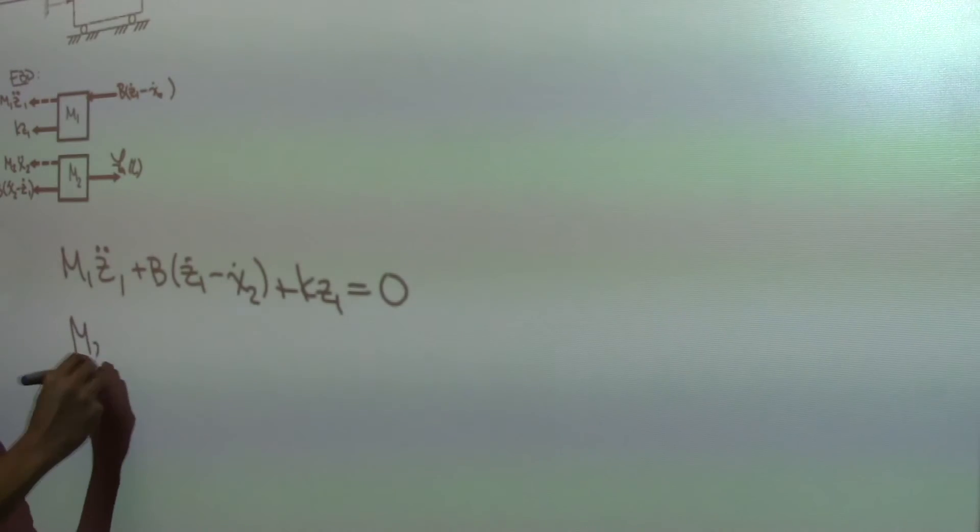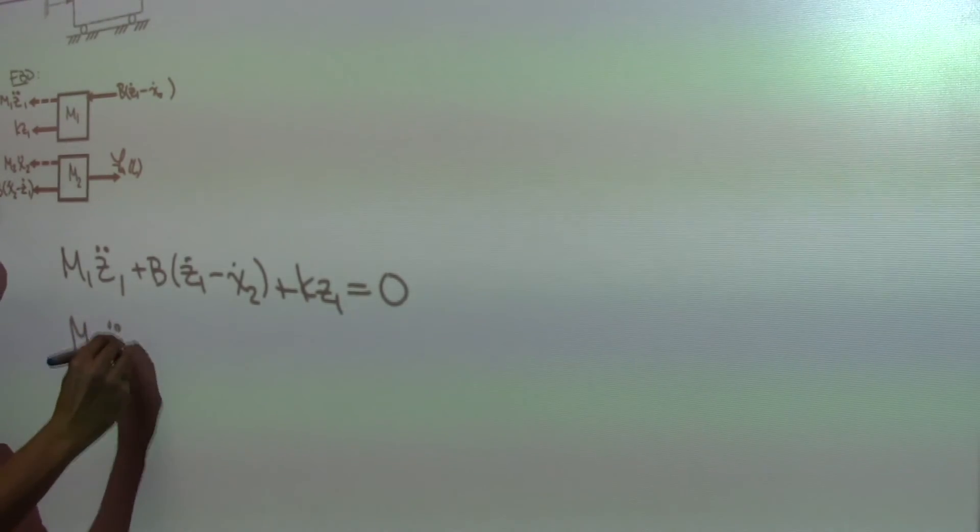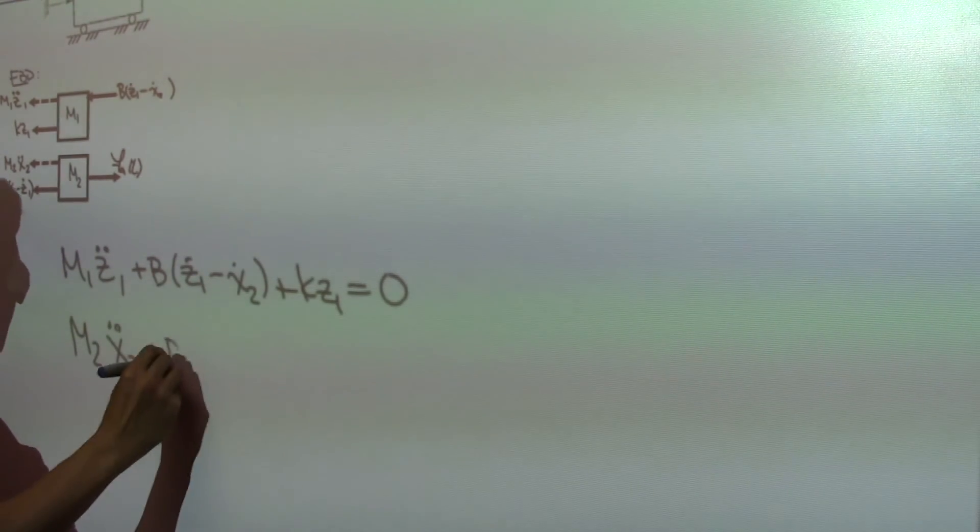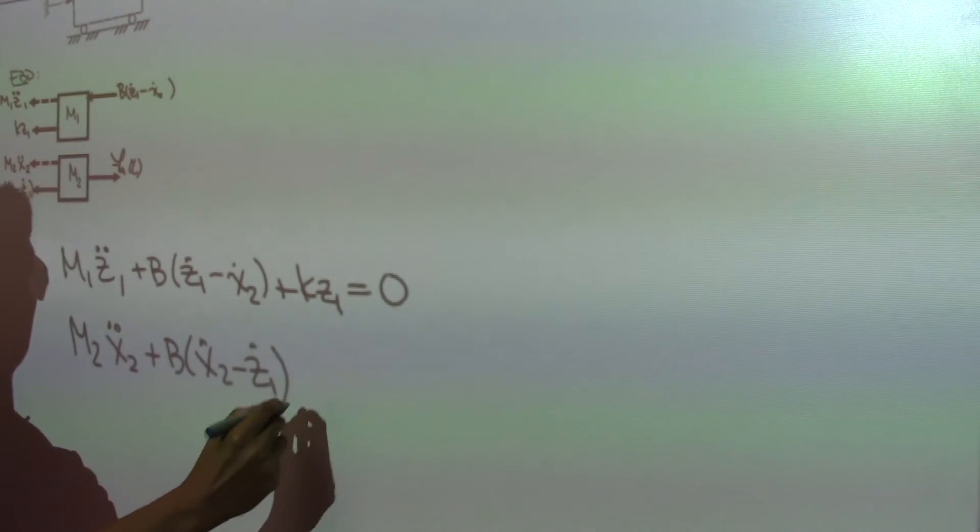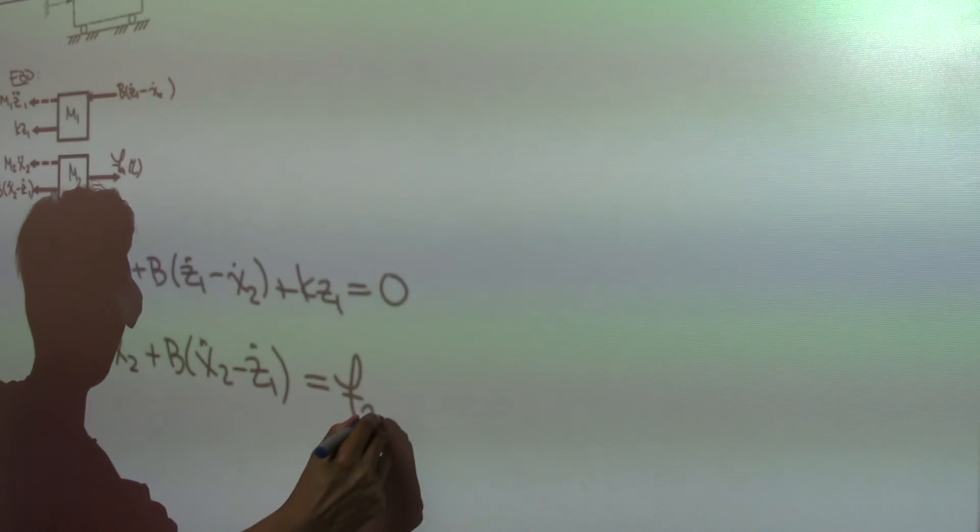And if I look at mass 2, we'll have M2 X double dot 2 plus B(X dot 2 minus Z dot 1) is equal to FAT.